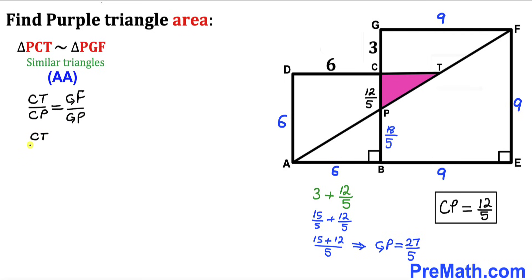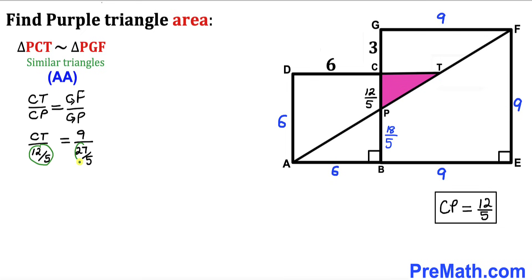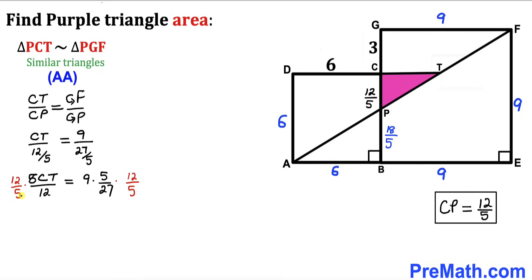Setting up the proportion: CT divided by CP equals GF divided by GP, so CT divided by 12/5 equals 9 divided by 27/5. Flipping the fractions, 5·CT divided by 12 equals 9·5 divided by 27. Multiplying both sides by 12/5 to isolate CT, the 5s and 12s cancel, giving CT equals 4 units.